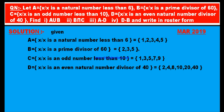Now find the four values. A union B: A = {1, 2, 3, 4, 5} union B = {2, 3, 5}. Union means list all elements present in either set. Since B's elements 2, 3, and 5 are already in A, A union B = {1, 2, 3, 4, 5}.